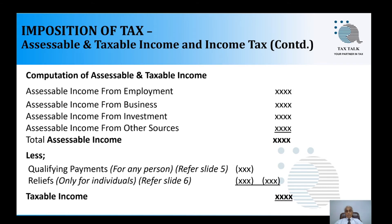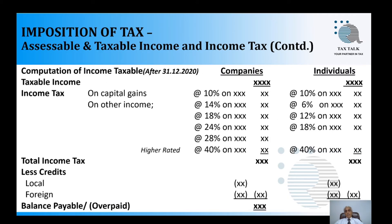Once we get the taxable income, we calculate the income tax by applying the applicable tax rate or rates. On capital gains, the tax rate is always a flat 10% for companies as well as individuals. On liquor, tobacco, and gambling, there is a higher tax rate of 40% for companies as well as individuals.